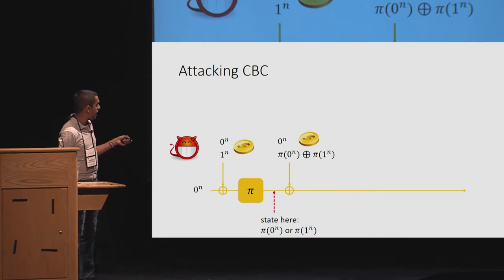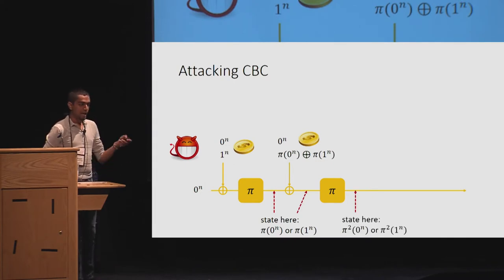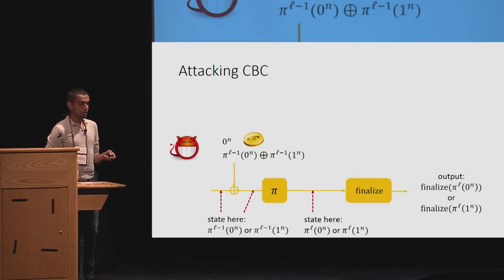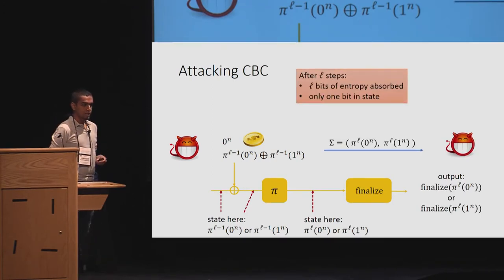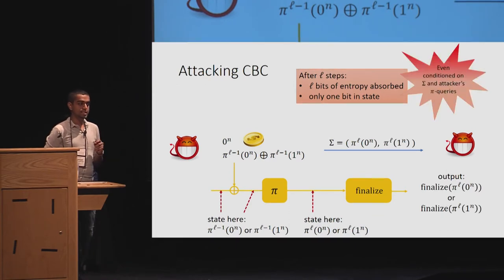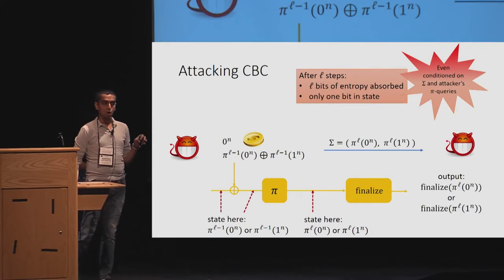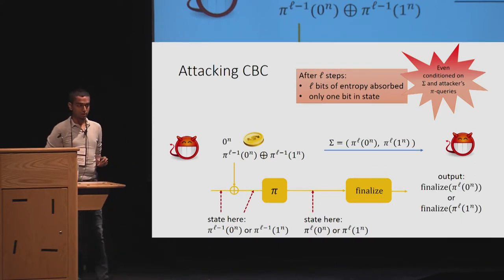The output of the second pi call becomes either pi squared of zero or pi squared of one. And this process is repeatedly done. After L steps, let's look at what has happened. It has absorbed L bits of entropy. But if you look at it, the state pi L of zero or pi raised to the L of one actually has only one bit of entropy in the output. And note that this is true even when conditioned on the state and the attacker's pi queries.